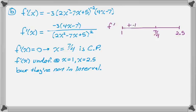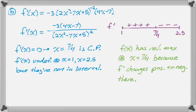And then if you plug in something like 2.5, you definitely get a negative overall. So now I'm just going to summarize and say that at x equals 7 fourths, which is the critical point, f prime changes from positive to negative, so there's a relative maximum. So f of x has a relative maximum at x equals 7 fourths, because f prime changes positive to negative there. Okay, so that's part B.